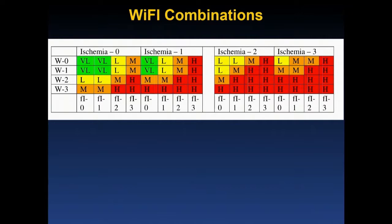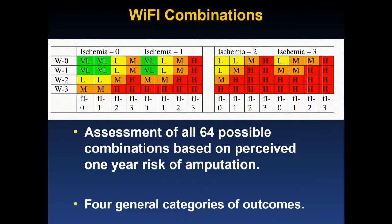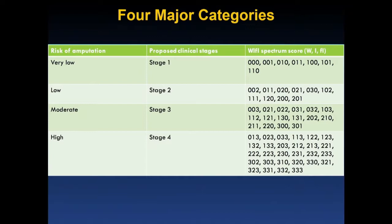This is what the WIfI combinations look like as a guide for risk categorization. Wound is scored 0 to 3, ischemia 0 to 3, and foot infection 0 to 3, creating a risk matrix coded green, yellow, orange, and red — representing very low, low, medium, and high perceived risk for major amputation. The Delphi consensus group assessed all 64 possible combinations based on perceived one-year risk of major amputation. There are more combinations resulting in stage 4 high-risk wounds and fewer in very low risk, but these four categories create an opportunity for outcomes analysis.